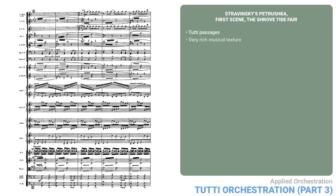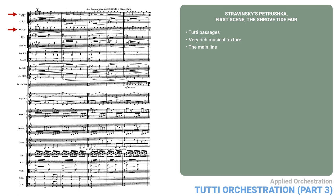Here Stravinsky has created a very rich musical texture. Having introduced various elements of the texture in the preceding bars, now the full orchestra is playing. The main line develops in the oboes and piccolos, which first prepare a repeated note motive, then carry it a bit further on the next page. Finally, at the end of the second page, the trumpets enter with the same motive, although with the little 16th note triplet we hear in the upper woodwind. At the climax of this passage, the music moves on to another idea.